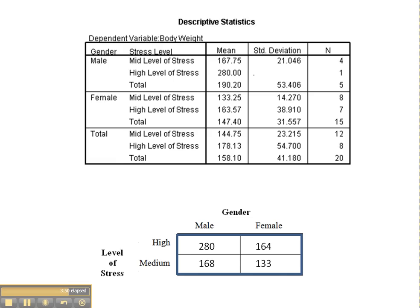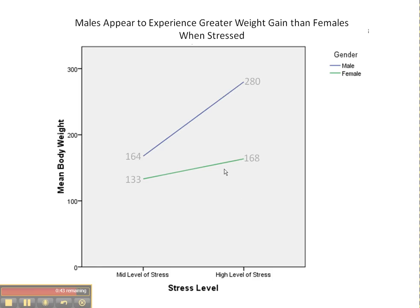Here are the descriptive statistics for our results from SPSS. We organize the data into a table: mid-level stress for males, high-level stress for males, mid-level stress for females, and high-level stress for females. A graph is a great way to share your results. Notice that males weigh on average more than females — that's clearly a main effect of gender. Also, people who are highly stressed weigh more than mid-level stress people, indicating another main effect. Additionally, males gained considerably more weight when highly stressed compared to females under high stress, meaning the lines are not parallel — this is indicative of an interaction between gender and stress.